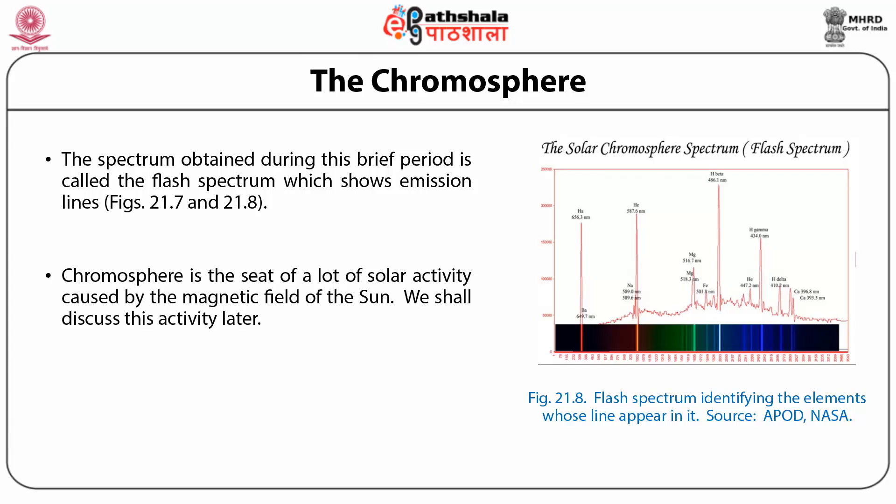The surface which radiates most of the energy and which appears as a disk to us is called the photosphere. There are two layers of the Sun's atmosphere above the photosphere. These layers are very faint and are not visible in the presence of the bright solar disk. When the disk is blocked — either naturally during an eclipse or artificially — these layers become visible for a very short time. The spectrum obtained during this time is called the flash spectrum. The chromospheric temperature has been estimated to be in the range 6000 to 20,000 Kelvin.